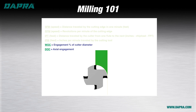Our last two terms that relate specifically to our operating parameters are WOC and DOC. WOC stands for width of cut and is typically referred to either as a percentage of the cutter diameter or as a numerical value. For example, in our diagram, if the cutter diameter is two inches and the material is about 50 percent of the tool diameter in width, then our width of cut is 50 percent, or in this case, one inch. The ideal amount is dependent on the application and the material being machined, which we'll cover at a later time.